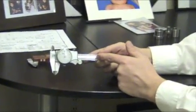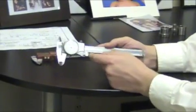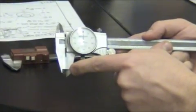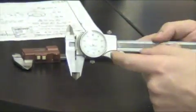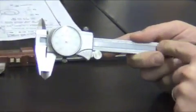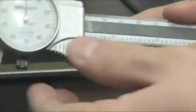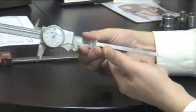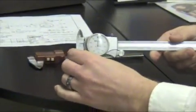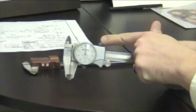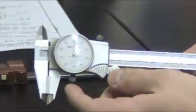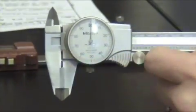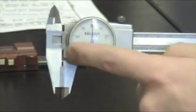Here is a dial caliper. It's very similar. You have your outside and inside jaws. You have your main scale. You have your depth probe to check the depth. You have a locking mechanism. Down here, you have a locking mechanism for the dial. And of course, this is the dial reader.